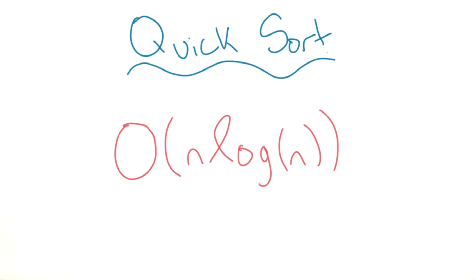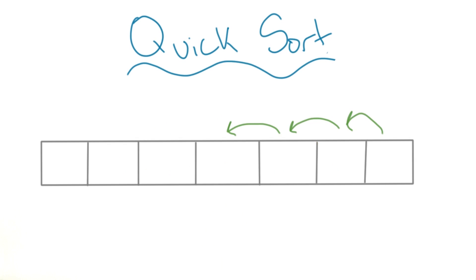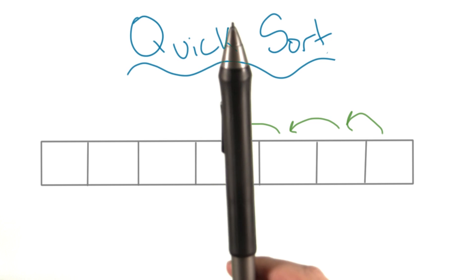First of all, the average and best case complexity are actually n log n. In a good case, the pivot will move down to the middle and we'll get to divide the array in half every time.